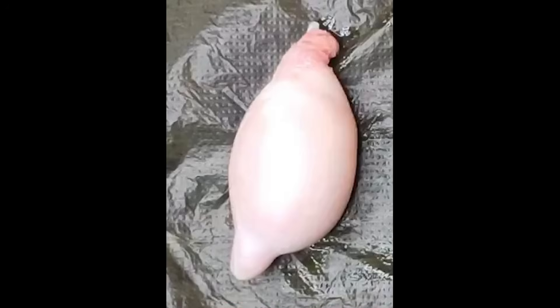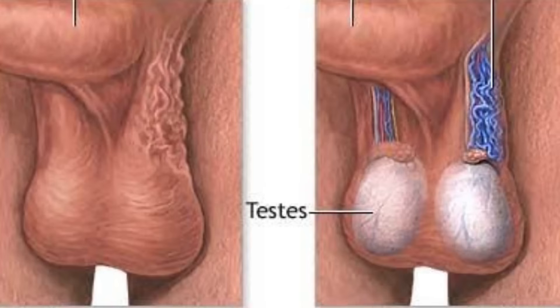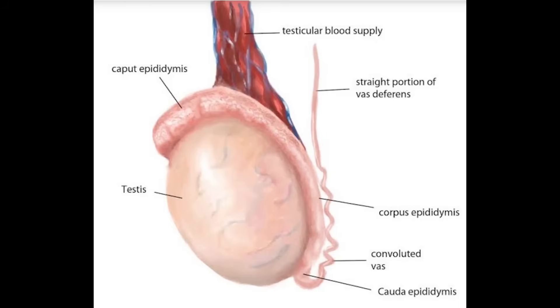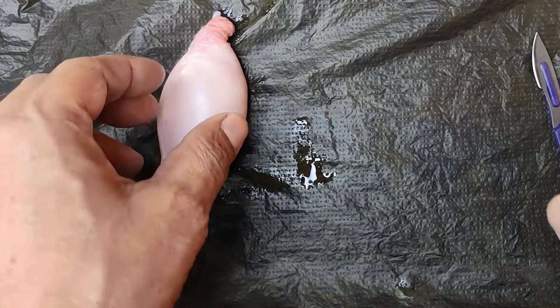Here we have the testes of the goat. We will do the dissection of the goat's testes. They are formed in the lower abdominal cavity and are located in the pouch called the scrotum. Here is about the testes — the testes of the goat.